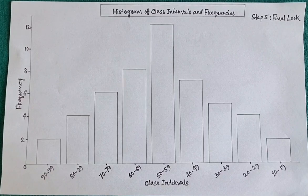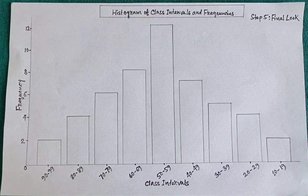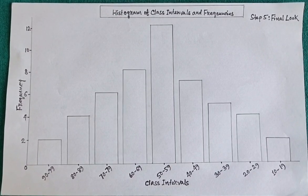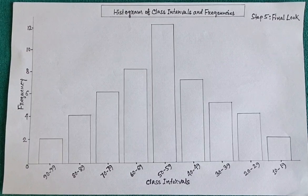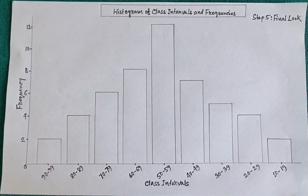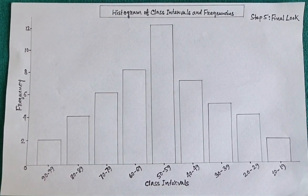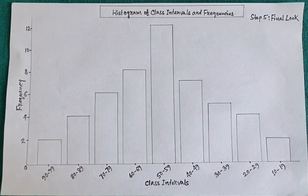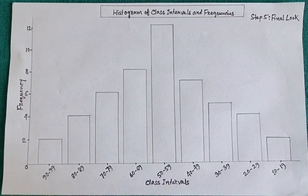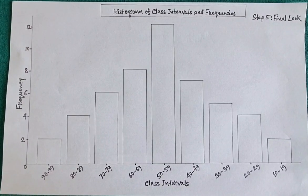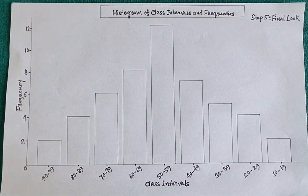Step 5: Final look. And here's the completed histogram. The tallest bar, representing 50 to 59, shows the highest frequency of 12, while the shortest bars show a frequency of 2. This visual representation makes it easy to analyze the data.